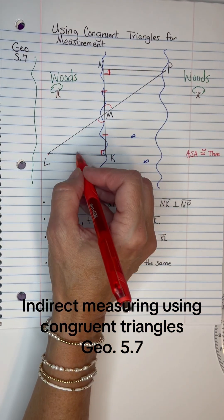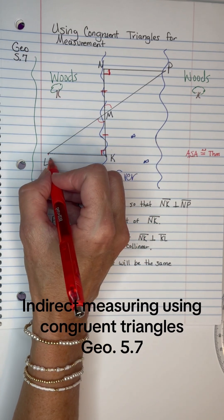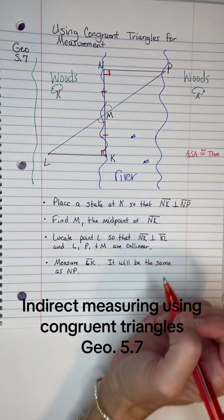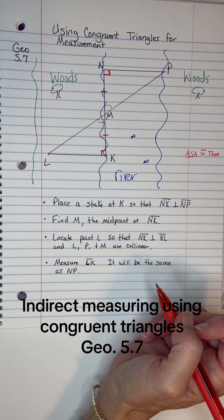That means NP is going to be the same size as LK. So go back and measure LK, and whatever LK is will be the distance from N to P across your river.